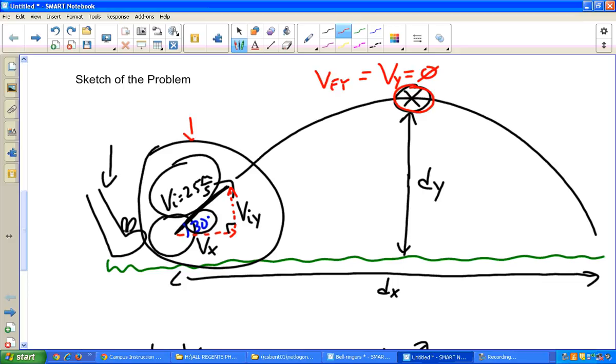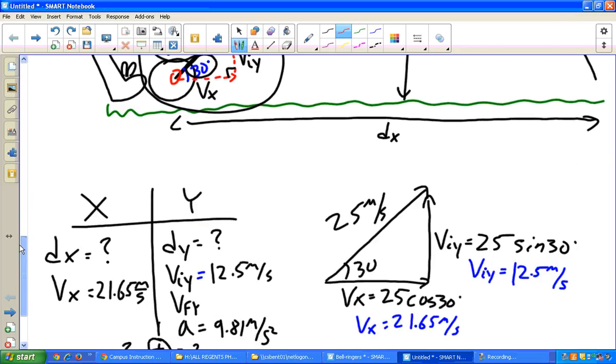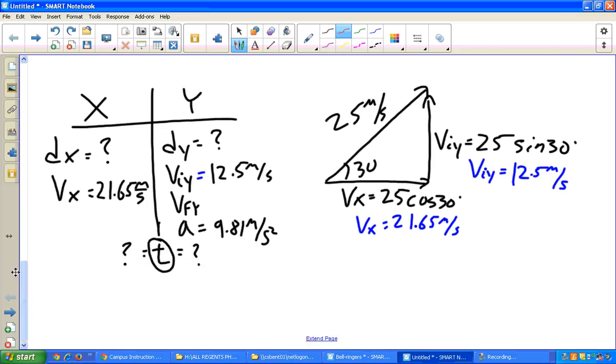So what I'm going to do for this problem is I'm going to call that Vfy for now. Because I'm going to call my initial, right when the ball is kicked, Viy. And I'm going to solve the problem solving for the time it takes to get from the bottom up here to the top. So my Vfy I'm going to call at the top, I'm going to say that's zero.